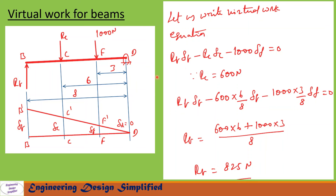Now let us write the virtual work equation. The equation is RB into delta B minus RC into delta C minus 1000 into delta F equals 0. We have seen in the previous slides that RC equals 600 N. Substituting RC and all other values for delta B, delta C, and delta F, and simplifying, we get the reaction at B, RB equal to 825 N.